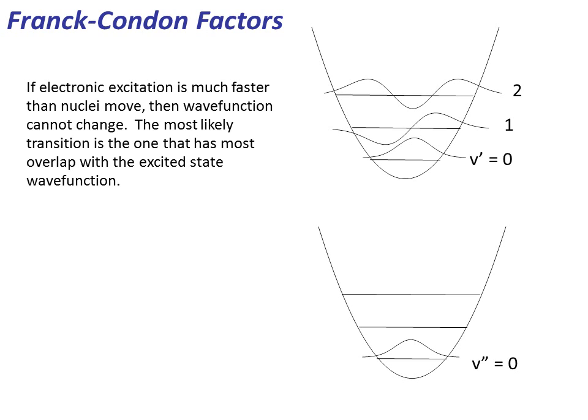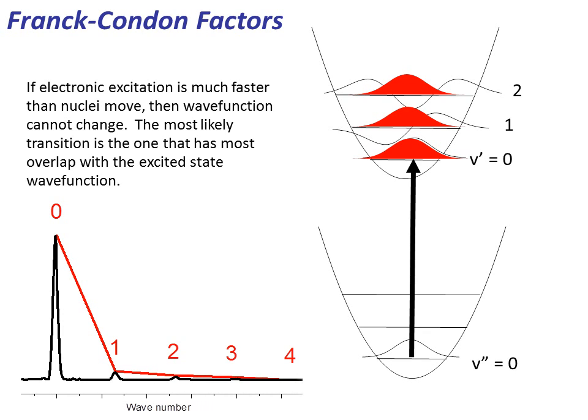Now let's look into the Franck-Condon factors. If electronic excitation is much faster than nuclei move, then the wave function cannot change. The most likely transition is the one that has most overlap with the excited state wave function. So in this case, the overlap between the state v double prime equal to zero is maximum with v prime equal to zero. Hence, the zero-zero transition, labeled as zero, has the highest intensity.